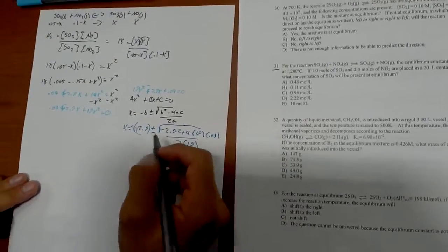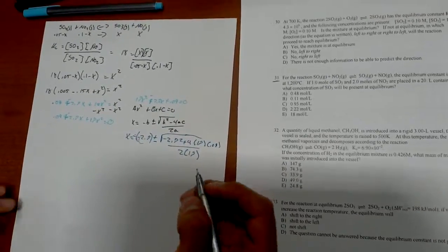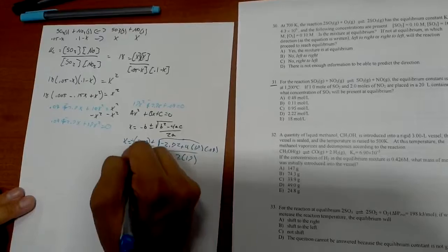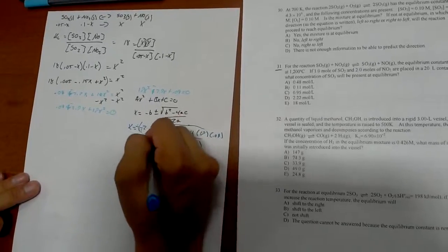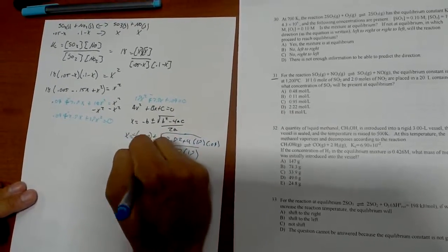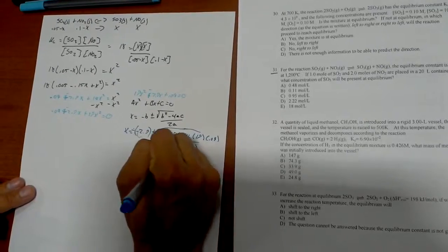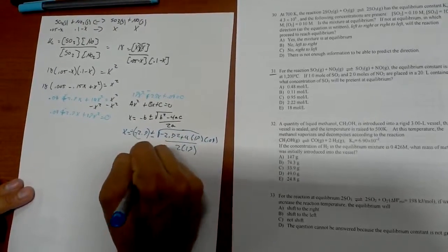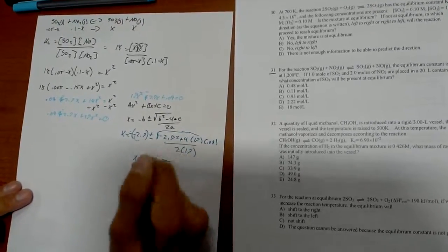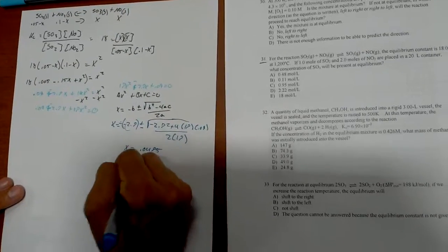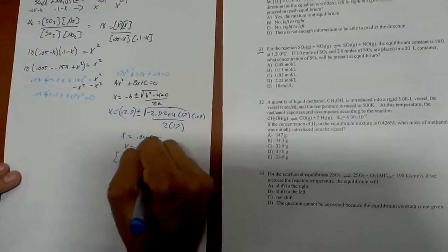So then if you solve it, you're going to come up with two numbers. The one that we're going to use, I believe, is a minus, so then x equals 0.0475. Rounded, x equals 0.048, so our SO3 concentration is equal to 0.048.